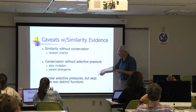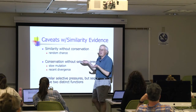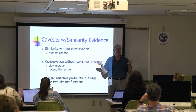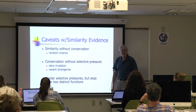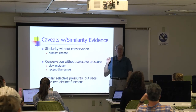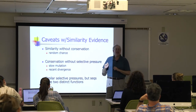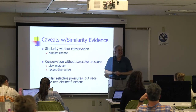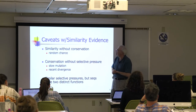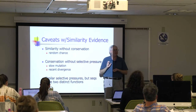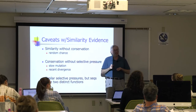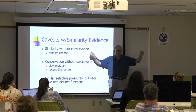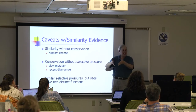Let's go through each of these bits one at a time. How can you have similarity between two sequences when there's no conservation — when the sequences did not in fact come from a common ancestor at all? Genetic drift — you may have sequences that just by random mutation tend to end up looking like each other. We can quantify that process and put some numbers on it.